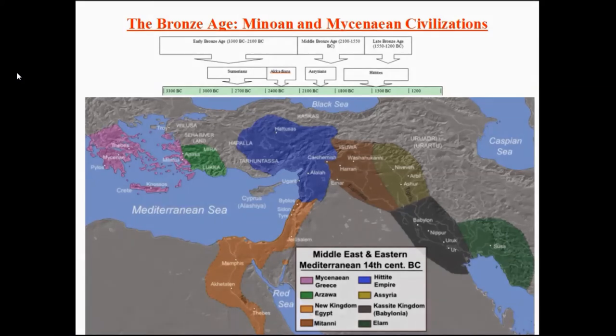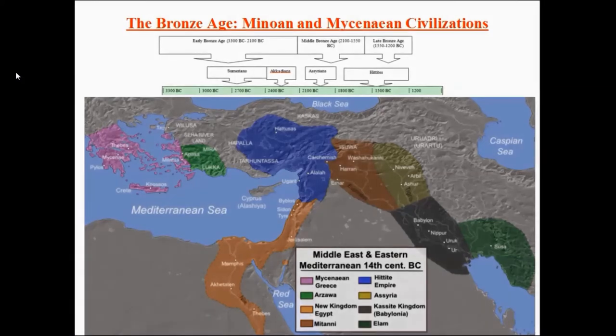Hello and welcome to this Unit 1 video lecture. This lecture is meant to supplement the unit reading, which is Chapter 2 of Thomas Martin's Ancient Greece. In this unit we begin in the Bronze Age, and we'll be examining the broader Mediterranean and Near Eastern civilizations to give some sense of how ideas and cultural components can travel across time and across geographical space.